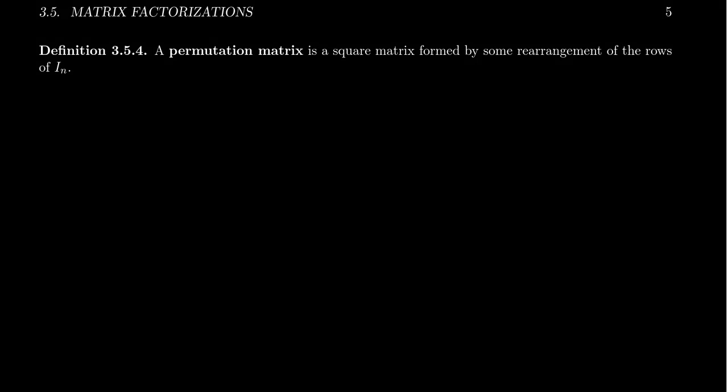The second type of elementary matrix is the interchange matrix, where we interchange two rows of the identity matrix but everything else remains the same. A permutation matrix is like an interchange elementary matrix 2.0, where we don't just interchange two rows of the identity — we could interchange any combination of rows. So a permutation matrix is a square matrix formed by rearrangement of the rows of the identity.